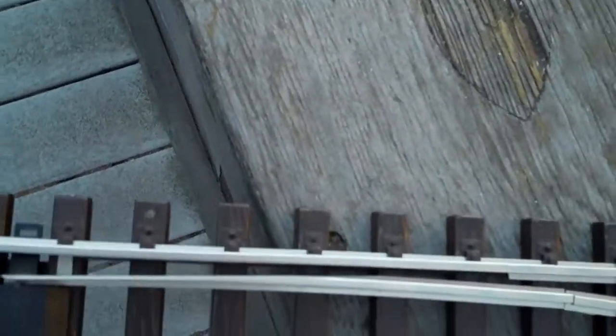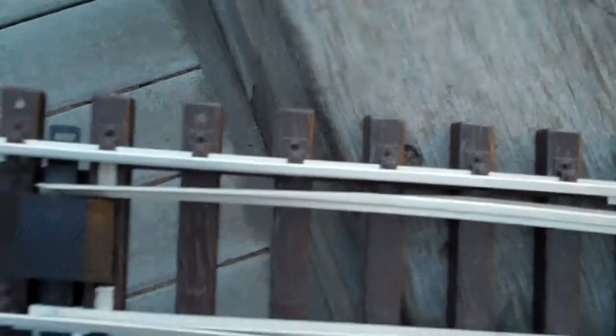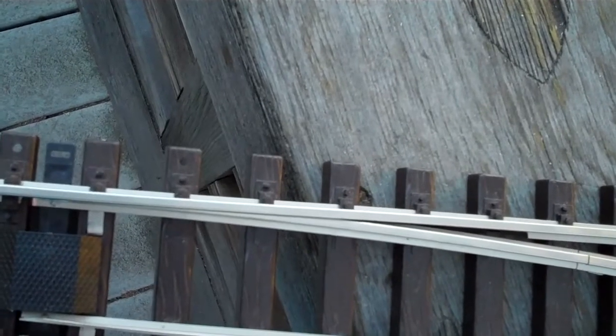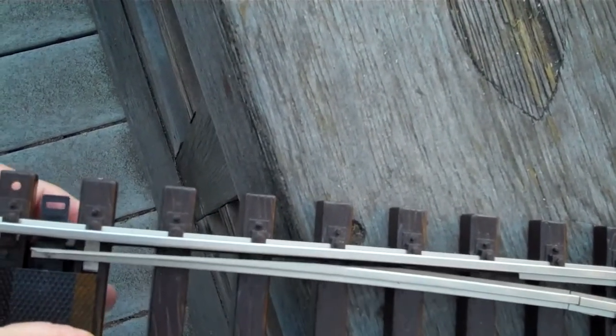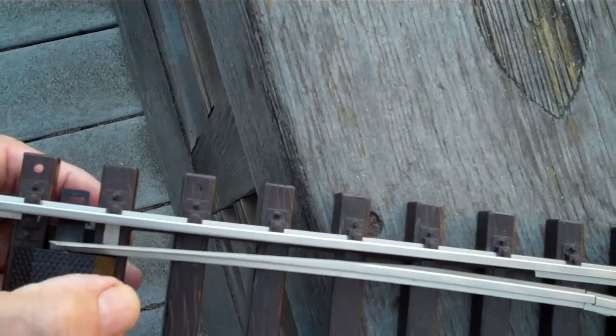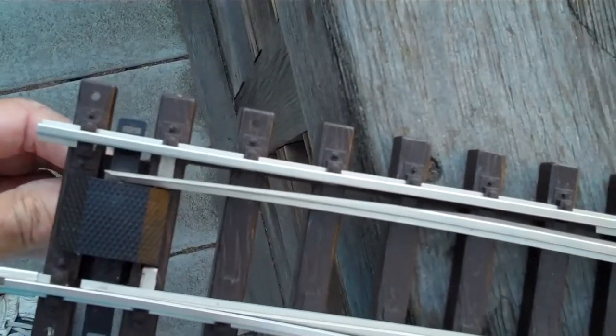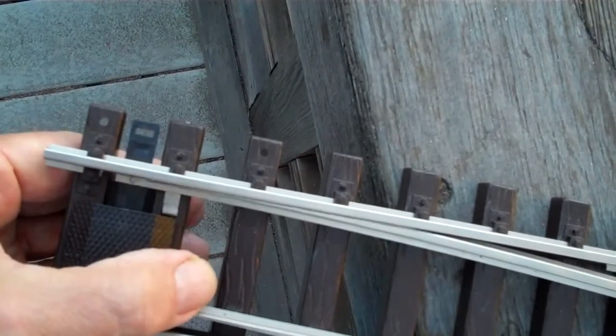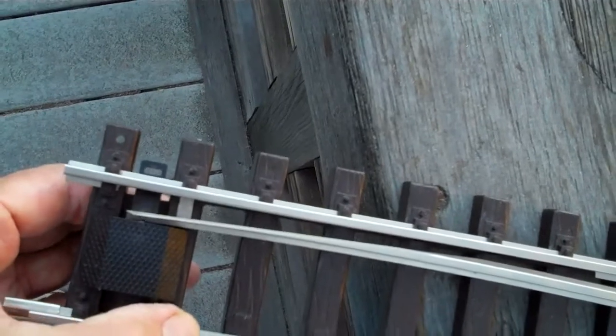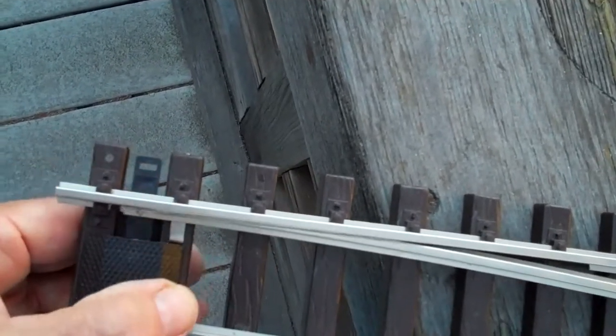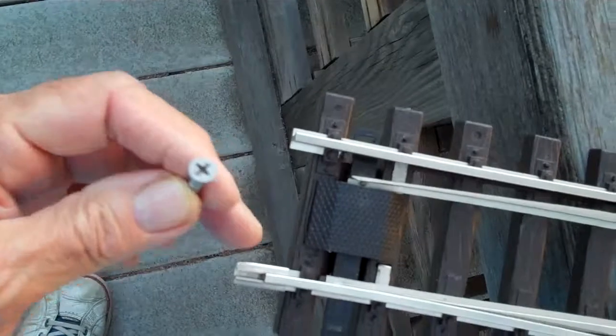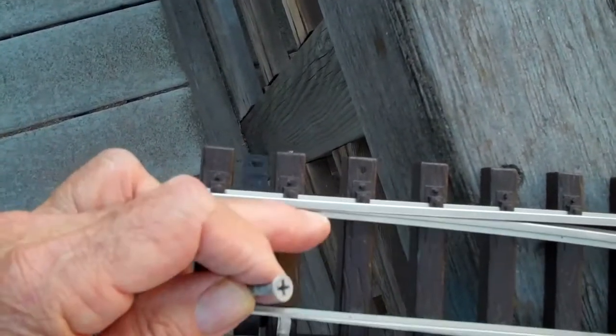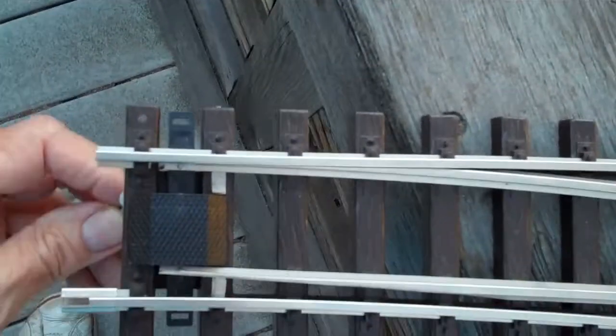So if I bring the magnetized screw underneath here, like this, and try to switch this thing, see if I can do it with one hand, there's no clicking action. If I pull it away, there's a clicking action. Apparently the magnetic field of this is overpowering the low intensity magnet inside here, and always leaving it in the diverging position.